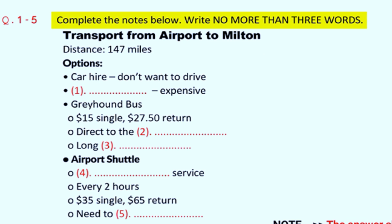Hello, this is Land Transport Information at Toronto Airport. How may I help you? Good morning. I'm flying to Toronto Airport next week and I need to get to a town called Milton. Could you tell me how I can get there? Milton, did you say? Let me see. I think that's about 150 miles southwest of here. In fact, it's 147 miles to be exact. So it'll take you at least three to four hours by road.